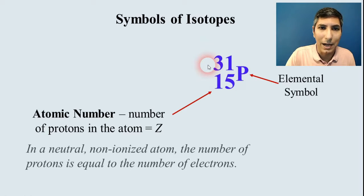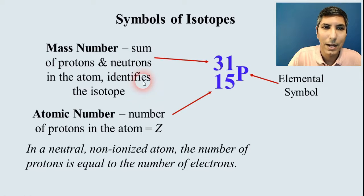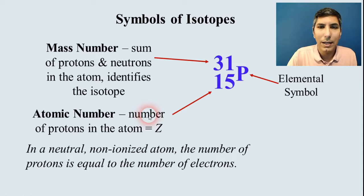The number on the top is the mass number, and that's the sum of the protons and the neutrons in an atom. That's going to identify the isotope. So if you have a question where it asks you how many neutrons there are,